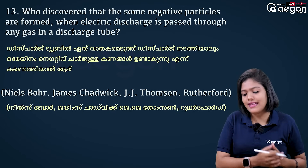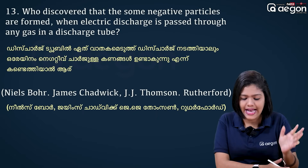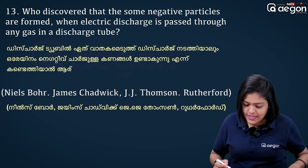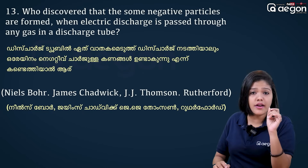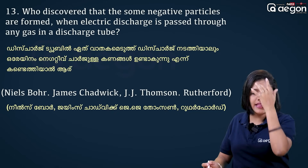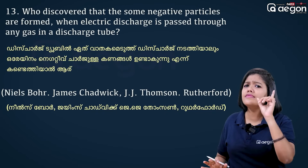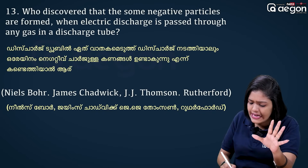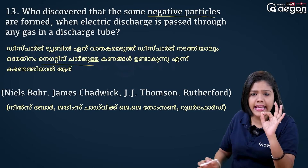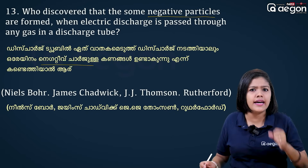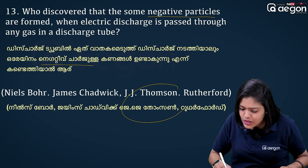Who discovered that some negative particles are formed when electric discharge is passed through any gas in a discharge tube? The key highlight is 'negative particles.' The answer is J.J. Thomson — he discovered the electron.